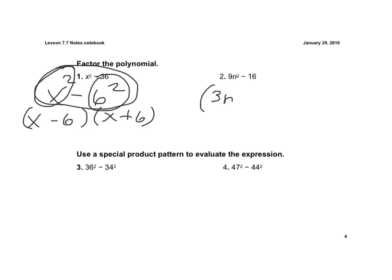And 16 is the perfect square of 4, so that's 4 squared. So now I have 3n minus 4 times 3n plus 4. And the reason it must be a minus and a plus is so that the middle terms cancel out. Notice that there's only two terms, so the middle terms have to cancel out.